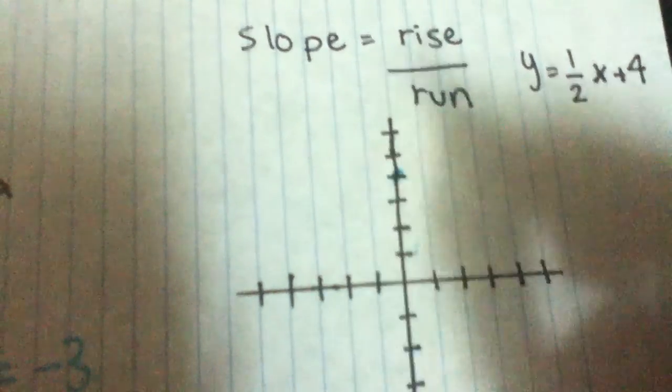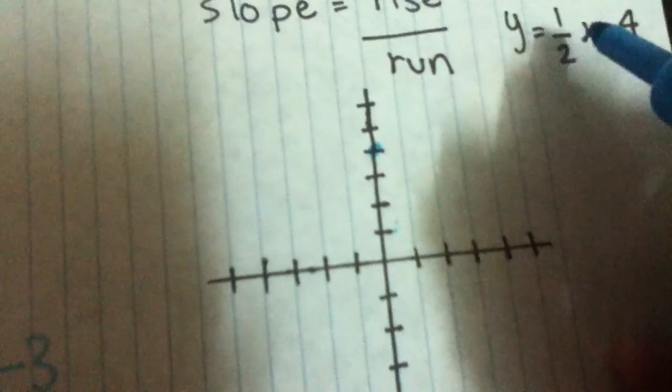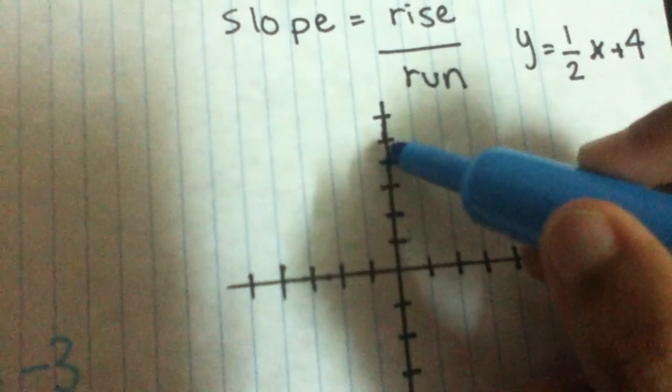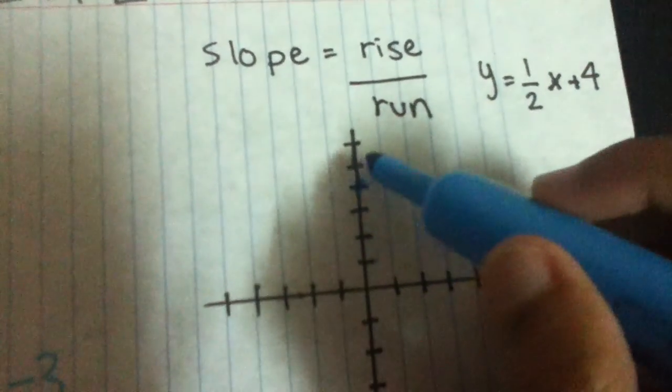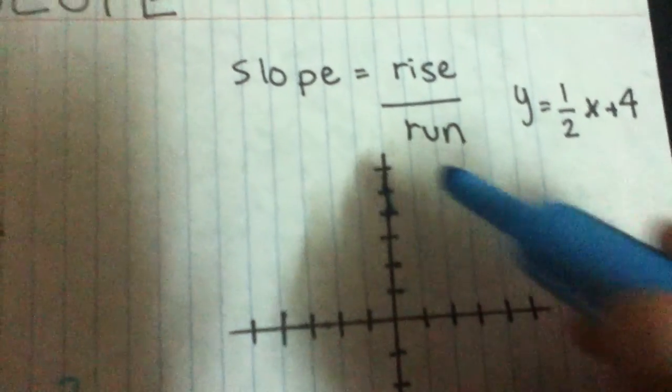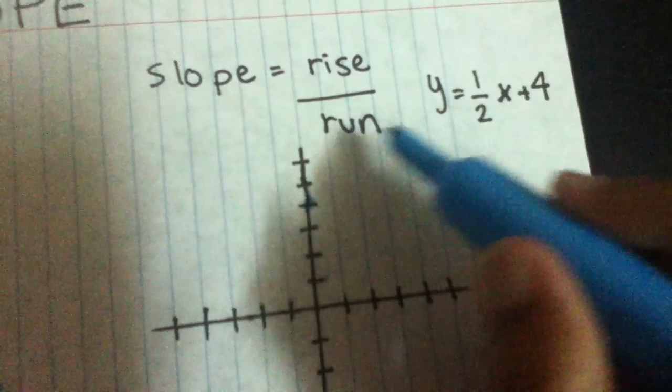Put a little circle there. And we rise 1, since this is 1, this is our rise, and we rise 1, and we move, we run 2.